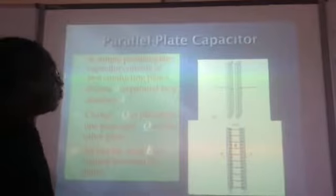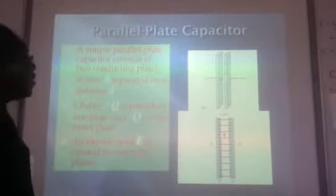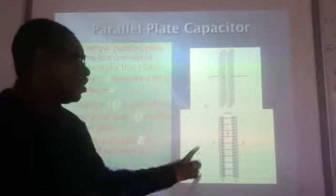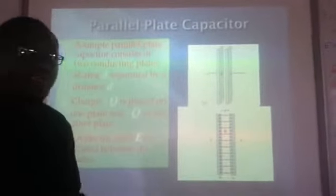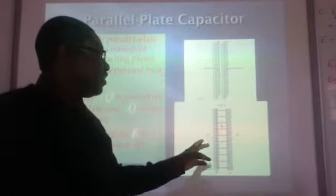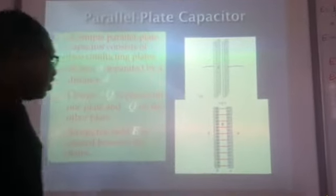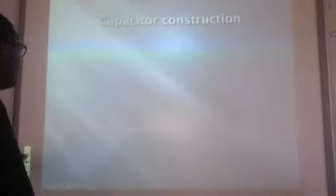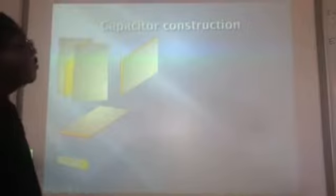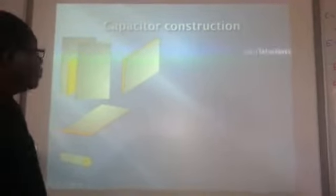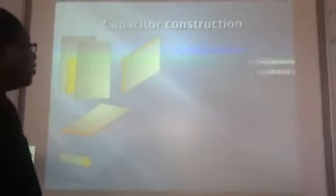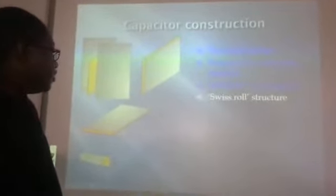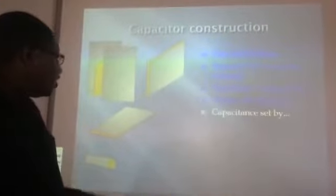For a simple parallel plate capacitor, the electric field set up between the plates is given by the potential V divided by the separation of the plates D. We have two metal plates separated by an insulating material — that is the basic structure of the capacitor.